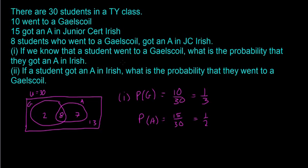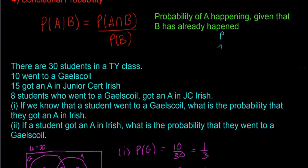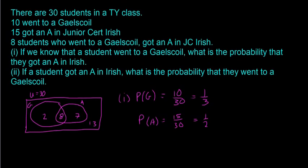But we can see that a lot of the students who went to a Gaelscoil also got an A. So what we're trying to find out is if we know that a student went to a Gaelscoil, then is the probability that they got an A in Irish going to be the exact same? Is it still going to be half? Or is it going to be higher? It's a condition. Because we already know something, it'll change the probabilities. And that's what this formula will help us figure out. You need to use the formula.